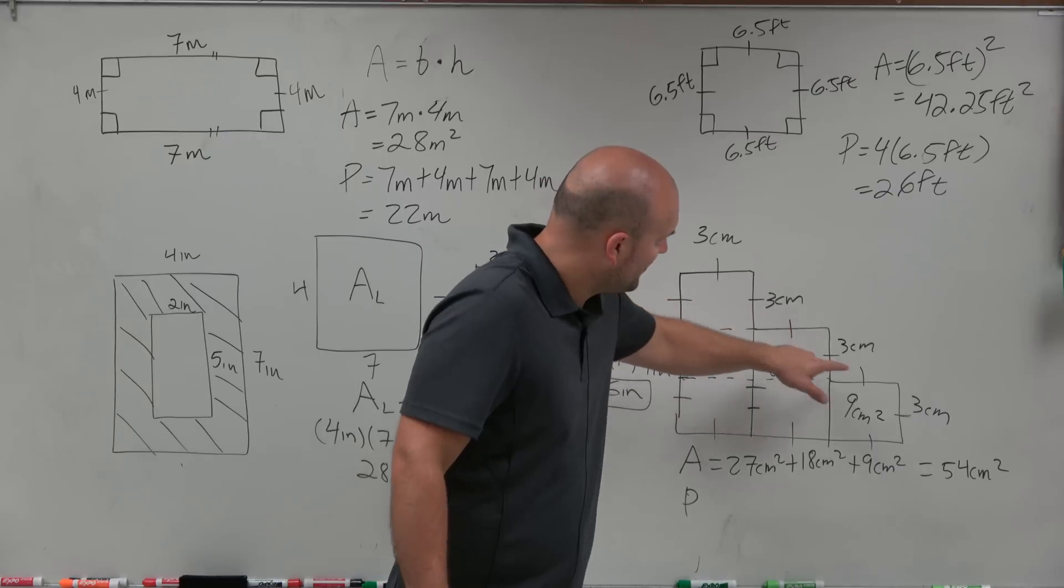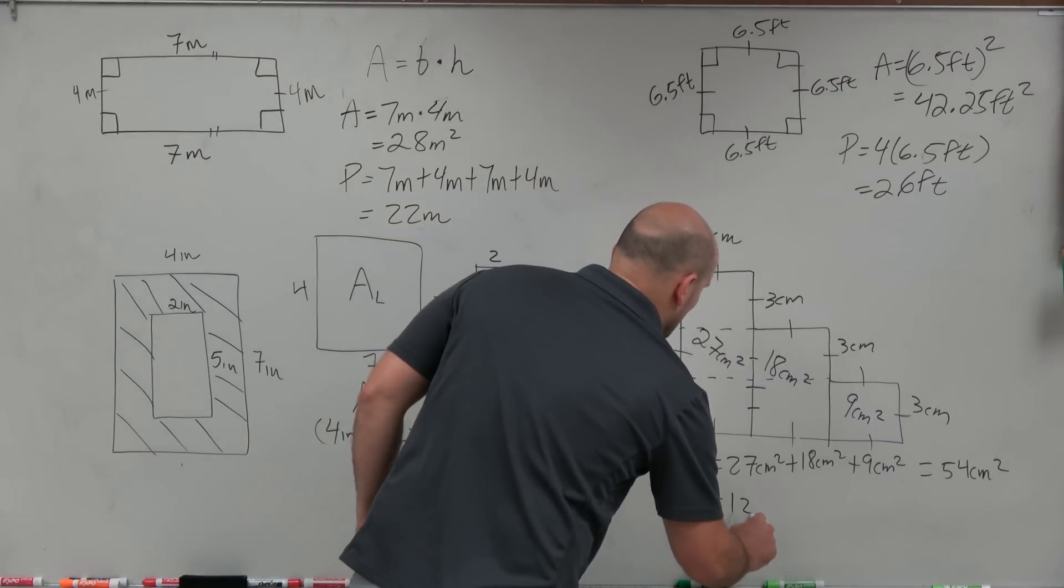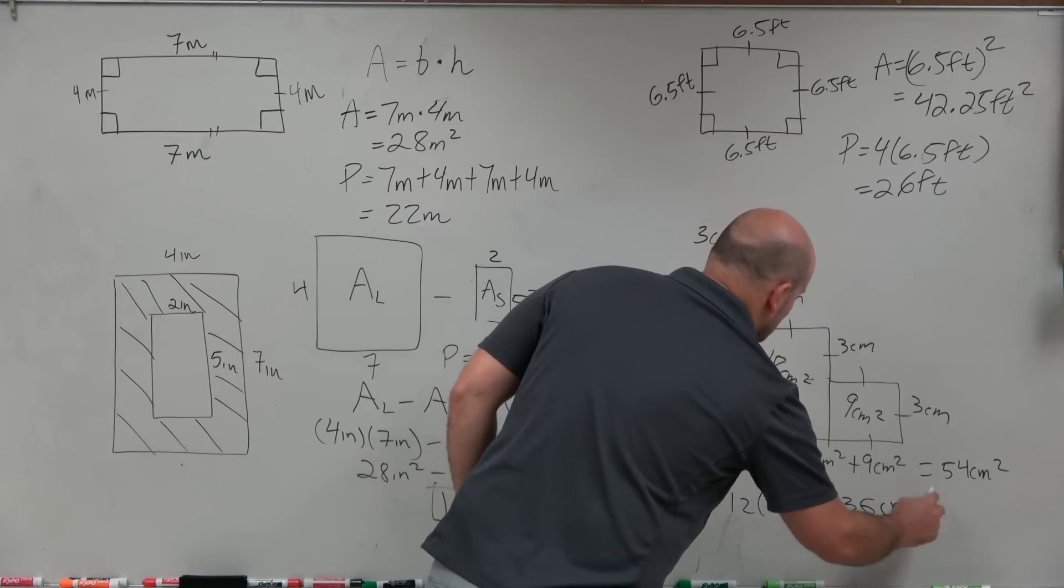1, 2, 3, 4, 5, 6, 7, 8, 9, 10, 11, 12. So therefore I'll do 12 times 3 centimeters, and that equals 36 centimeters.